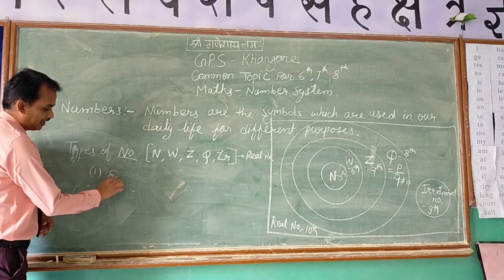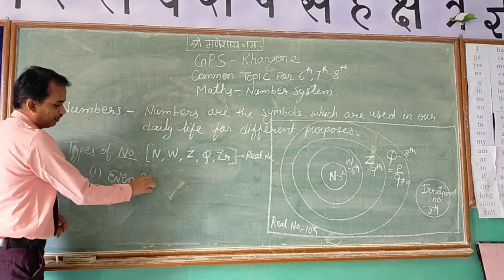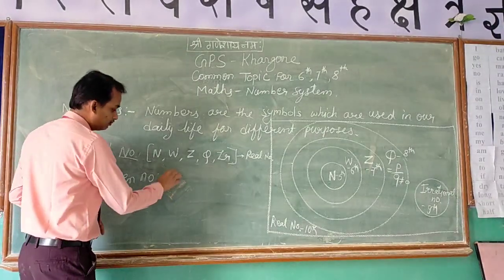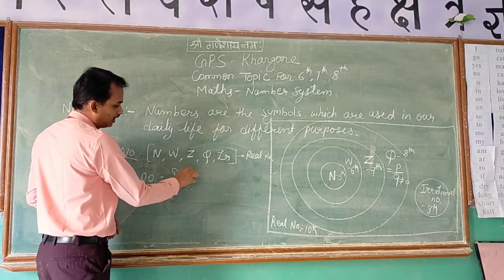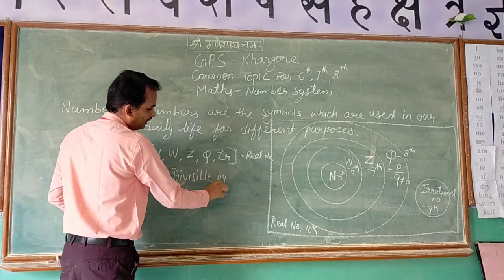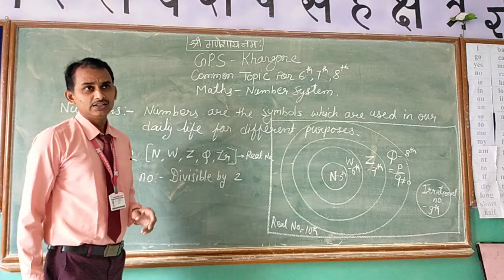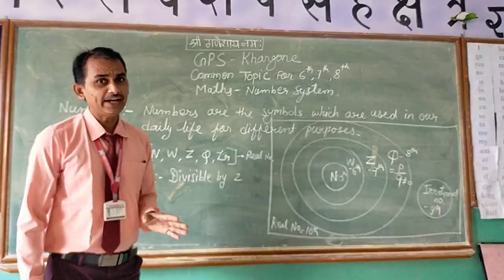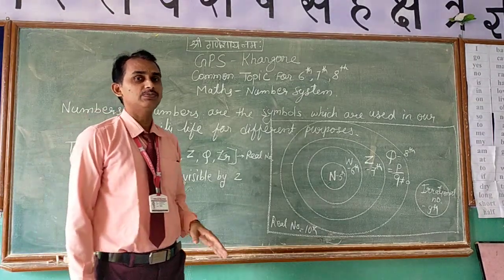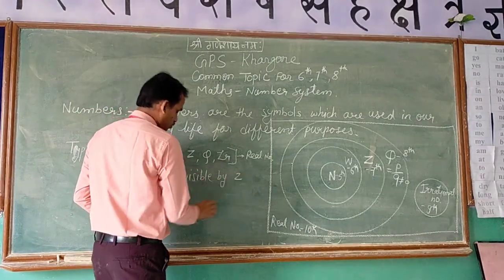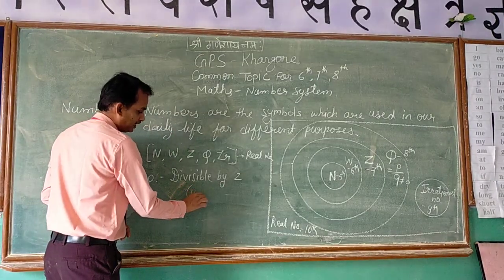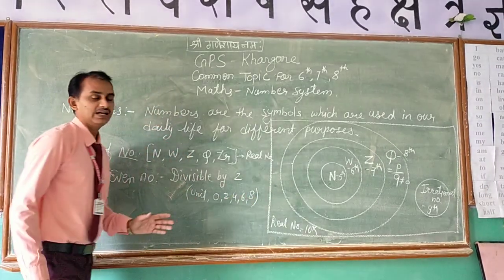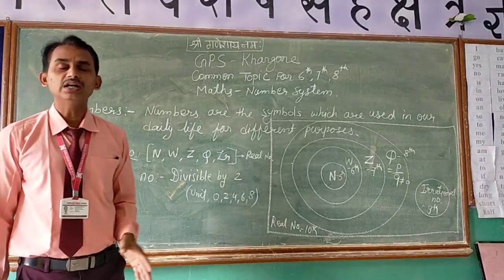The first thing is even numbers. Even numbers are numbers which are divisible by 2. We can also say that numbers which have 0, 2, 4, 6, or 8 on their units place are known as even numbers. If the units place digit is 0, 2, 4, 6, or 8, such numbers are even numbers.